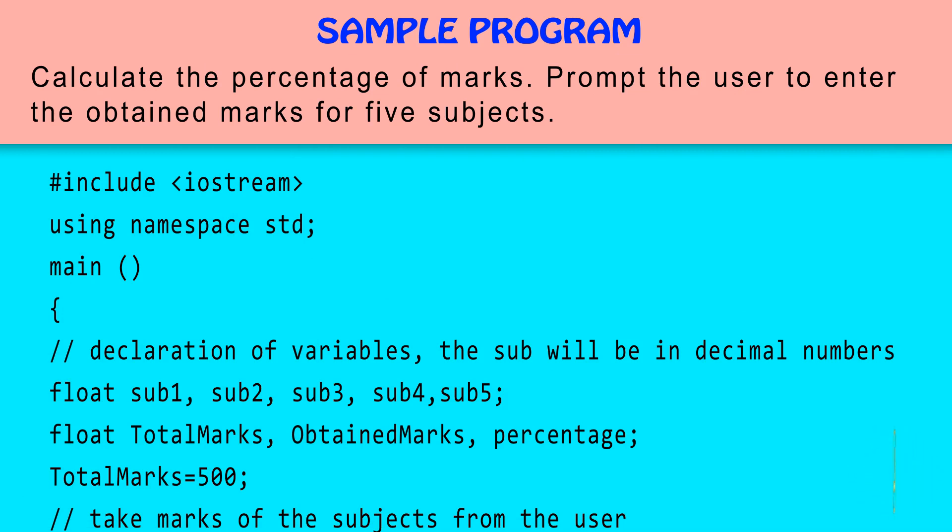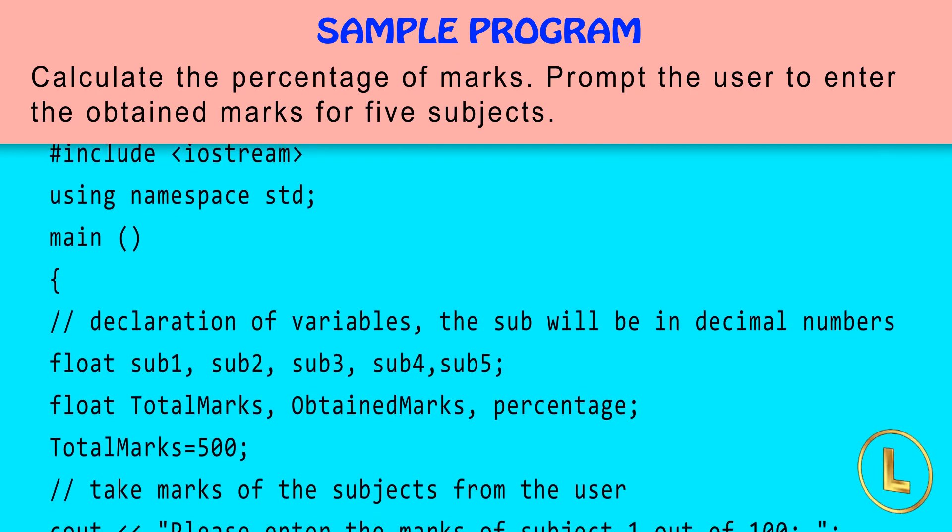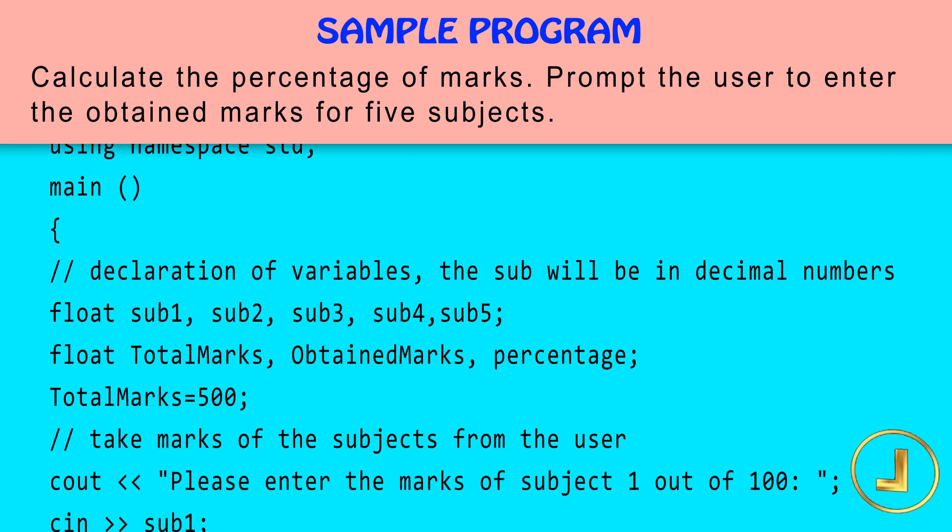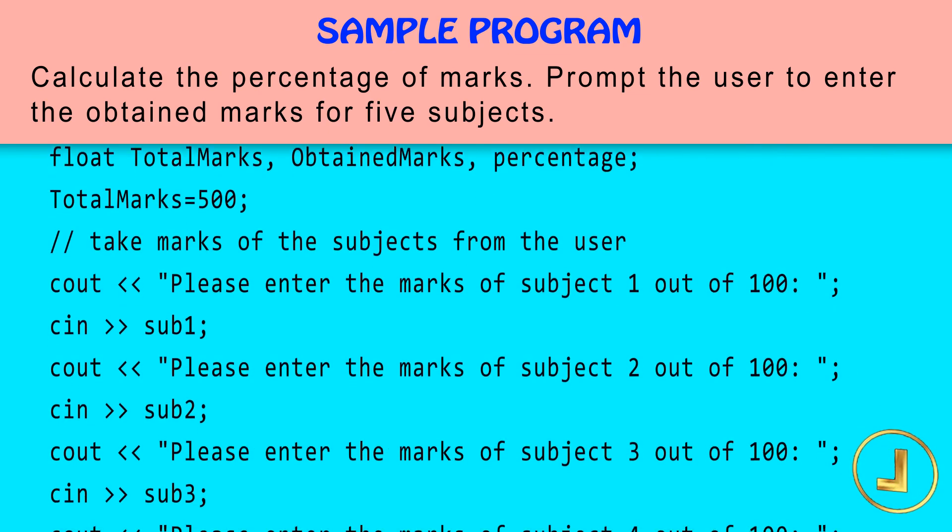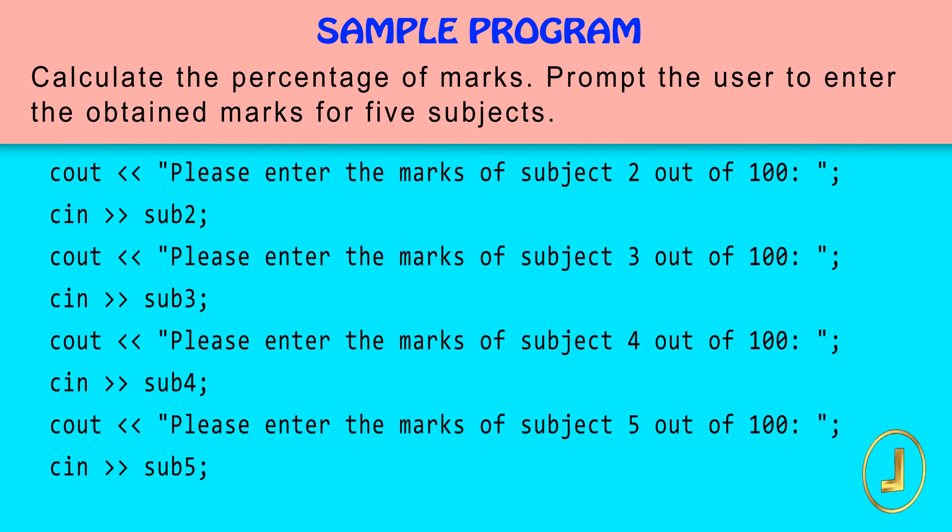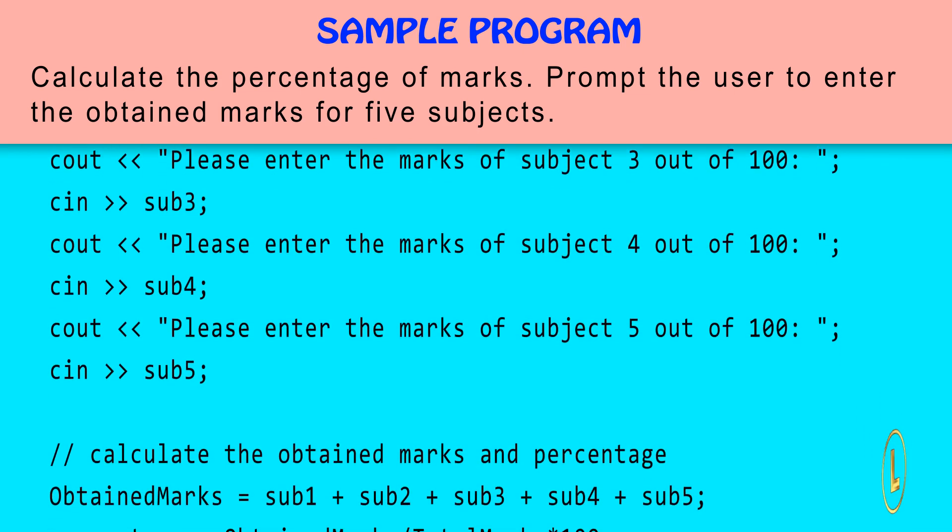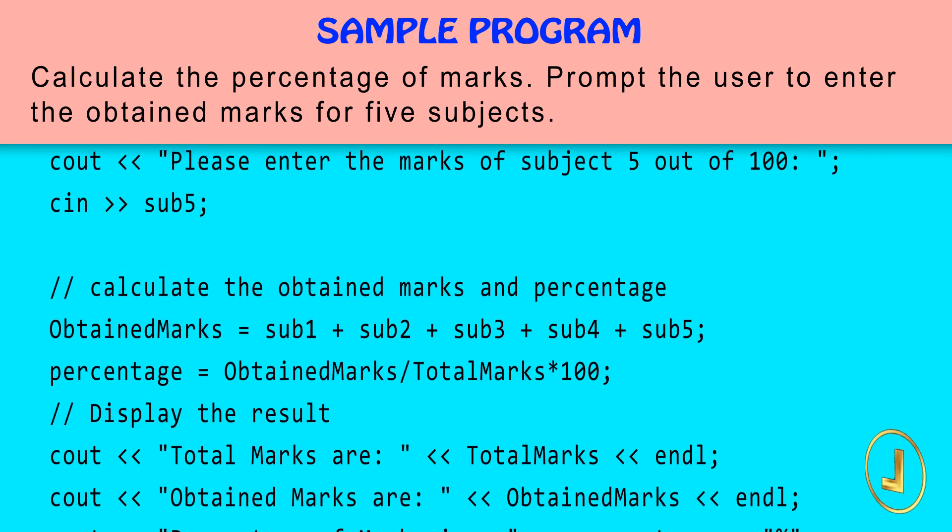Here is a sample program to calculate the percentage of marks. Prompt the user to enter the obtained marks for five subjects. In this program we used cin. cin is the counterpart of the cout. cin is the input stream that gets data from the user and assigns it to the variable on its right side.